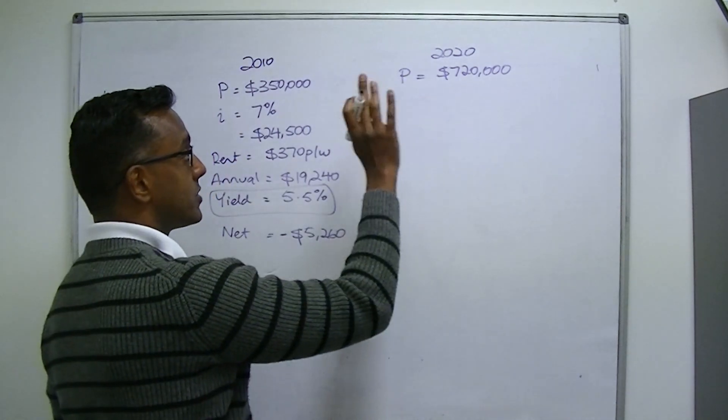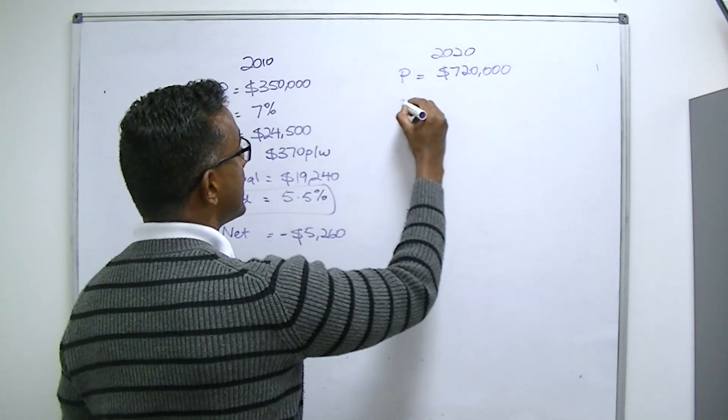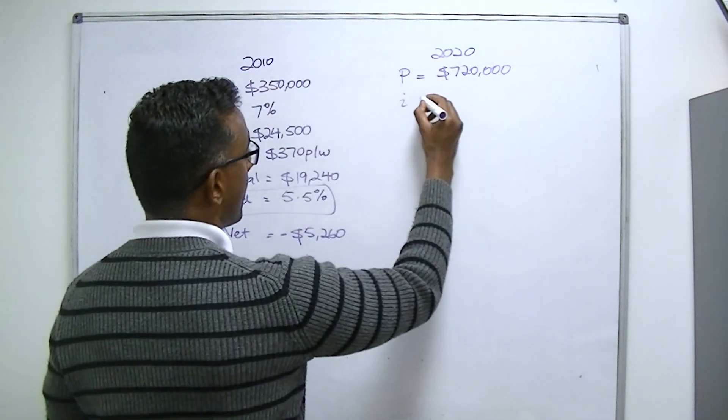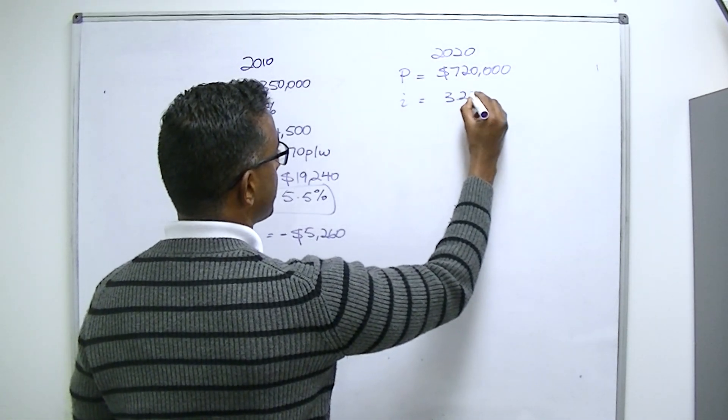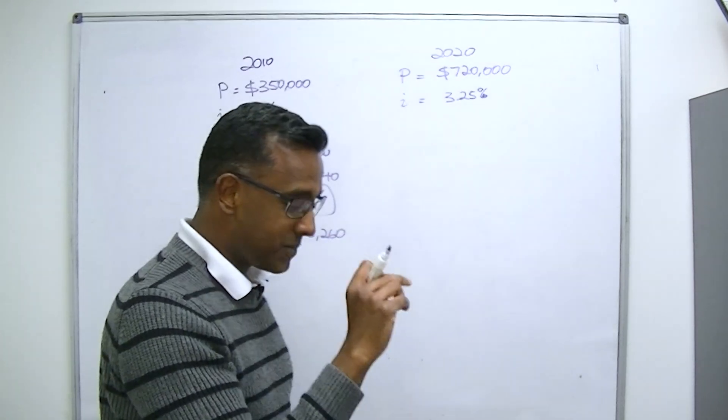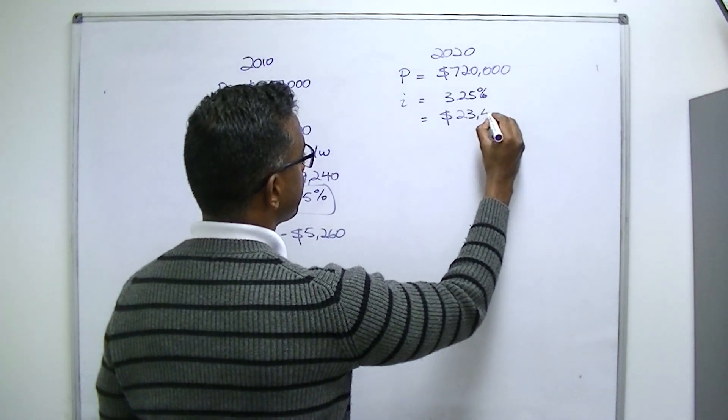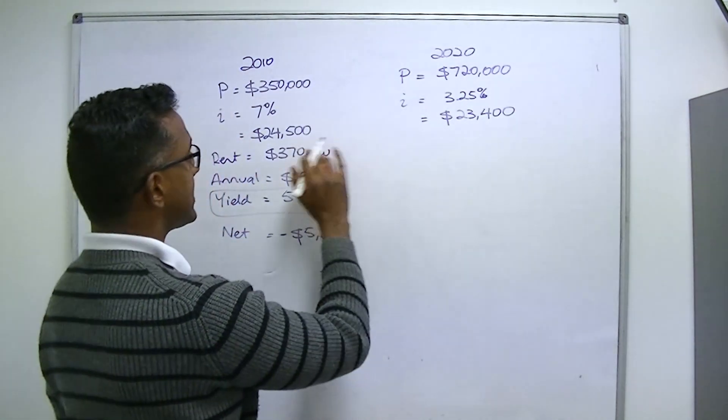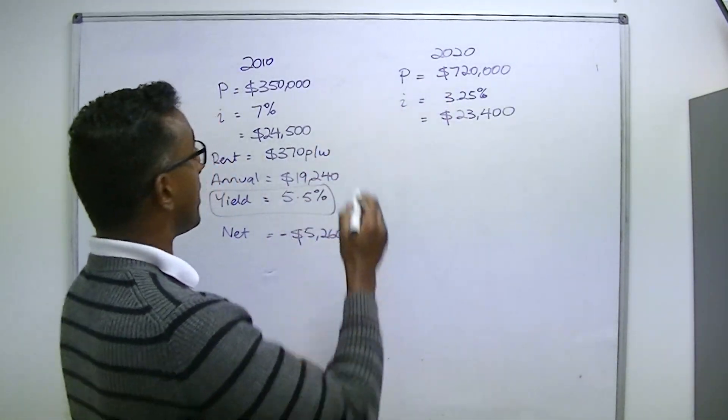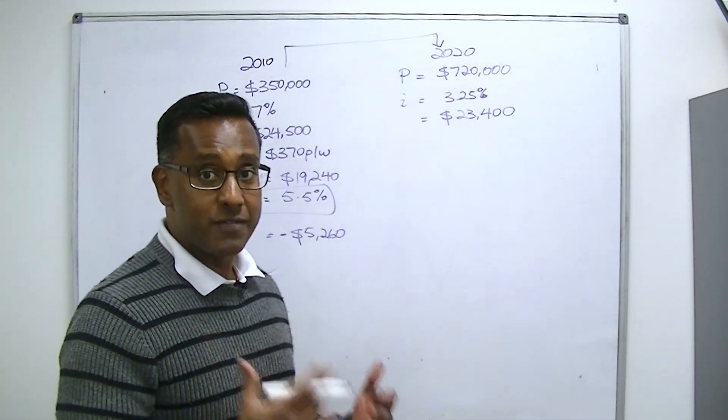But a lot of people get caught up on the yield and say, I want a high yielding property, I want a yield of 5%, 6%, whatever the case happens to be. But let's look at the actual raw numbers here. You can see that the property on the interest cost was $24,500, and the annual rent was $19,240, which therefore means their net annual cash flow was negative $5,260. So that meant that the property was costing them $5,260.